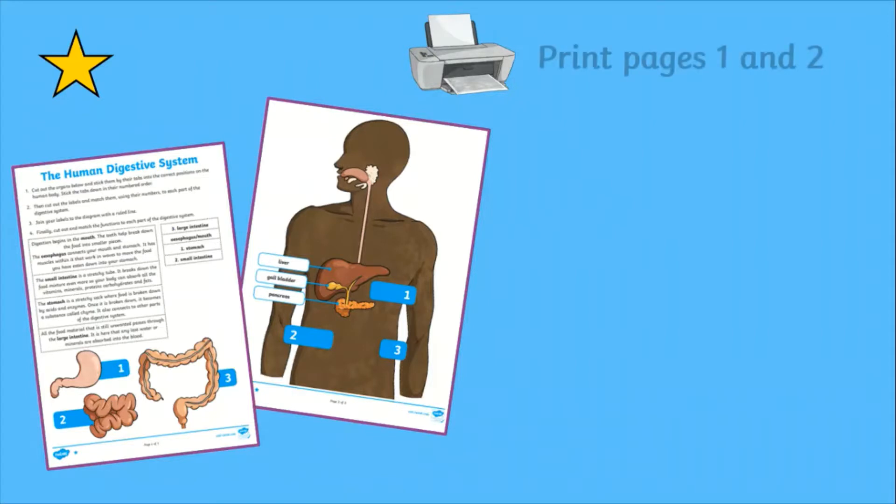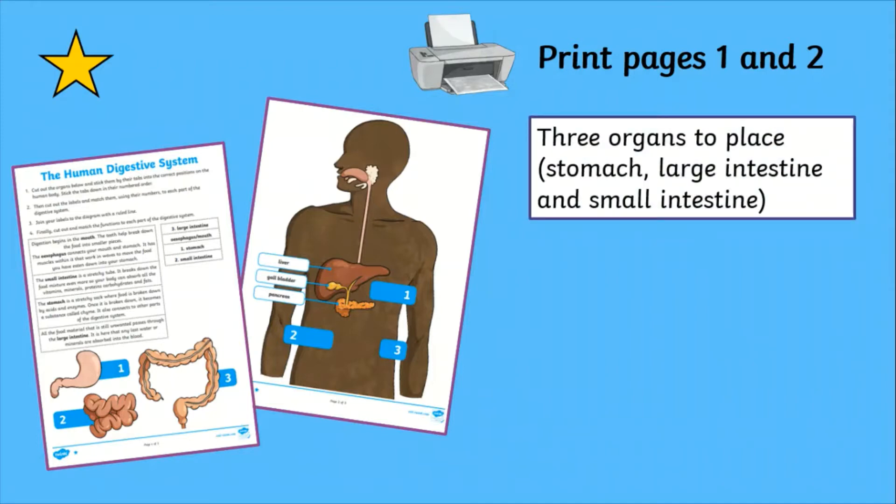Children will need a copy of pages one and two each to complete the simplest version of the activity. In the activity, children have three organs to cut and place.